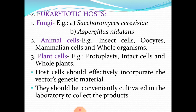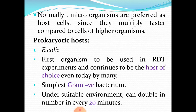Now, what should a host cell do? Host cells should effectively incorporate the vector's genetic material — they should readily accept the genetic material of the vector you have prepared. They should be conveniently cultivated in the laboratory to collect the products, because most of the times we do RDT experiments to get proteins of therapeutic use, and we need to retrieve them. Normally, we prefer microorganisms as host cells because they multiply faster compared to the cells of higher organisms.